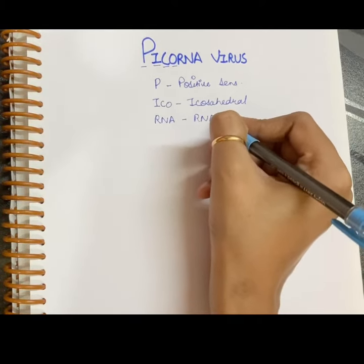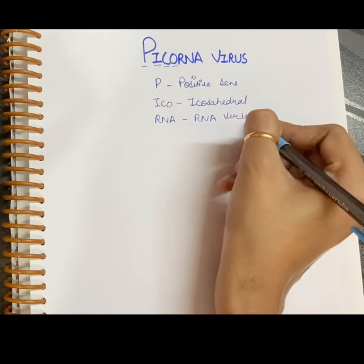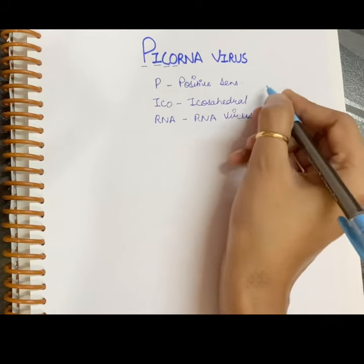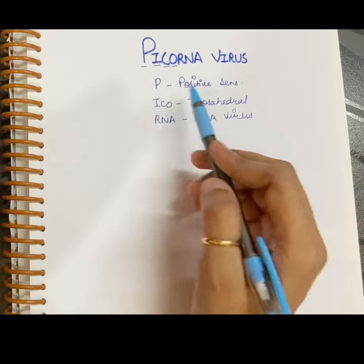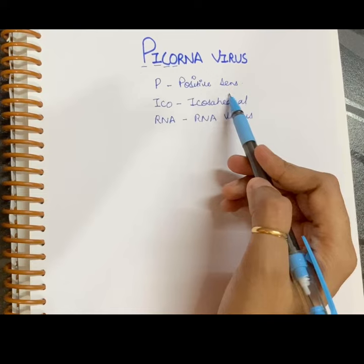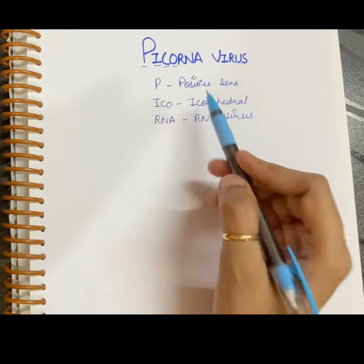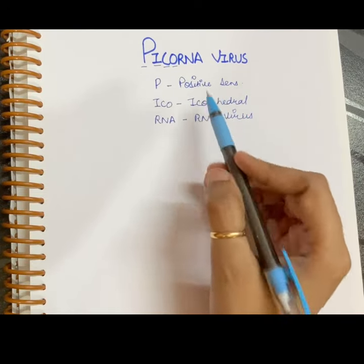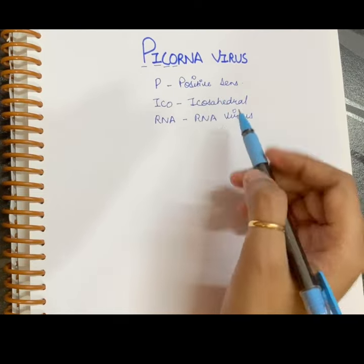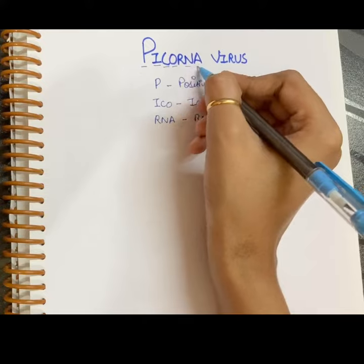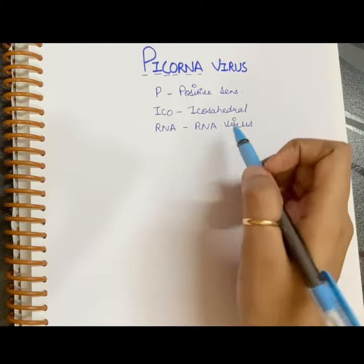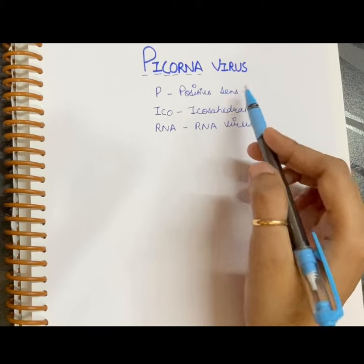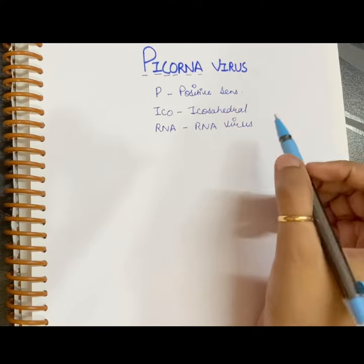So these are the features of picornavirus: P stands for positive sense, 'eco' stands for icosahedral, and RNA for RNA virus. Now moving to the next part — the group of viruses that come under picornavirus. How can you remember this?